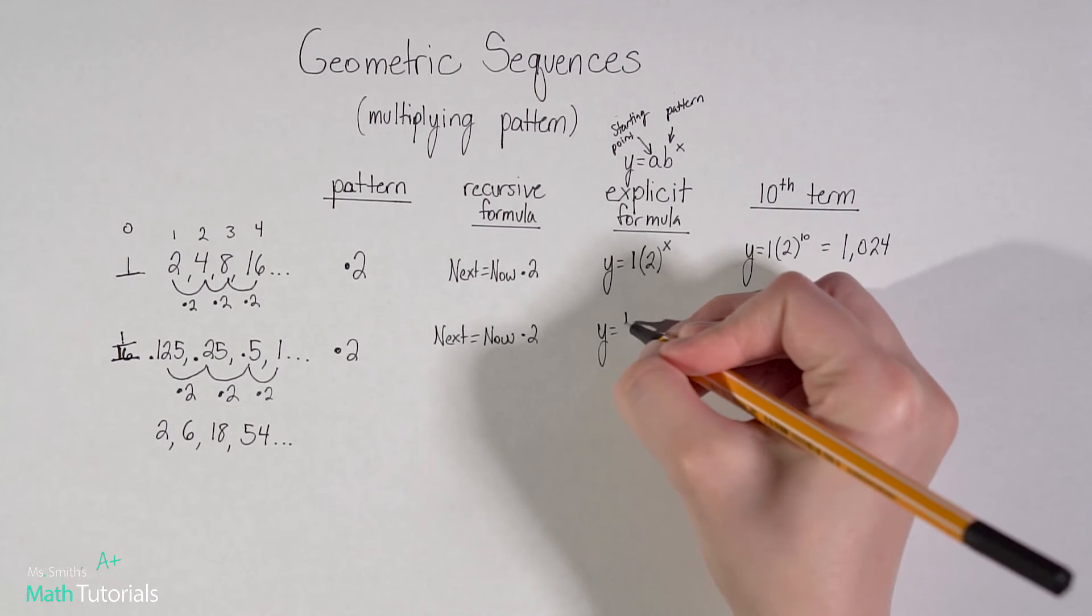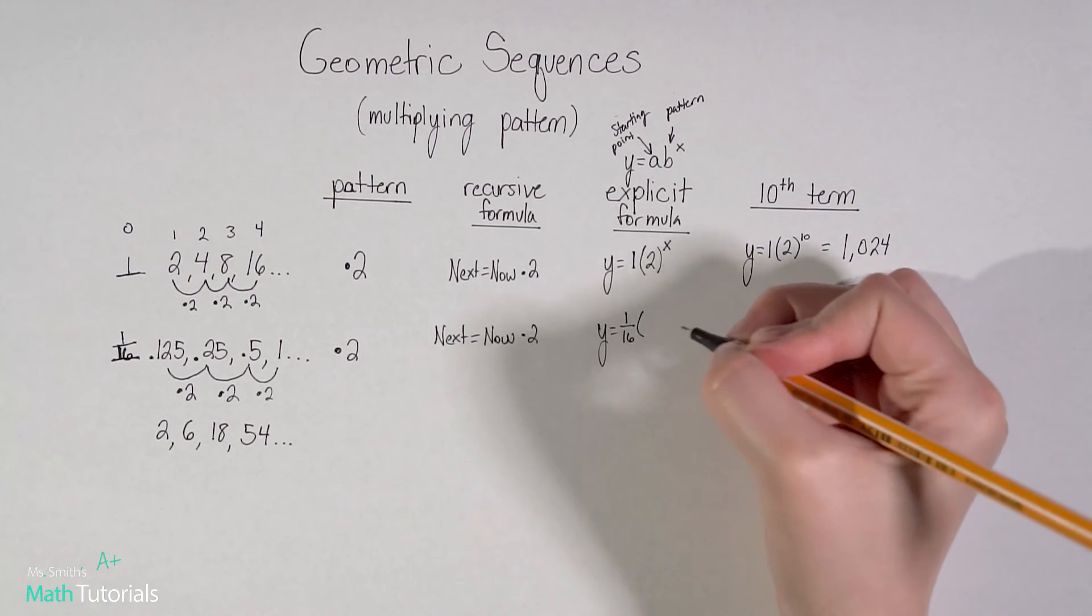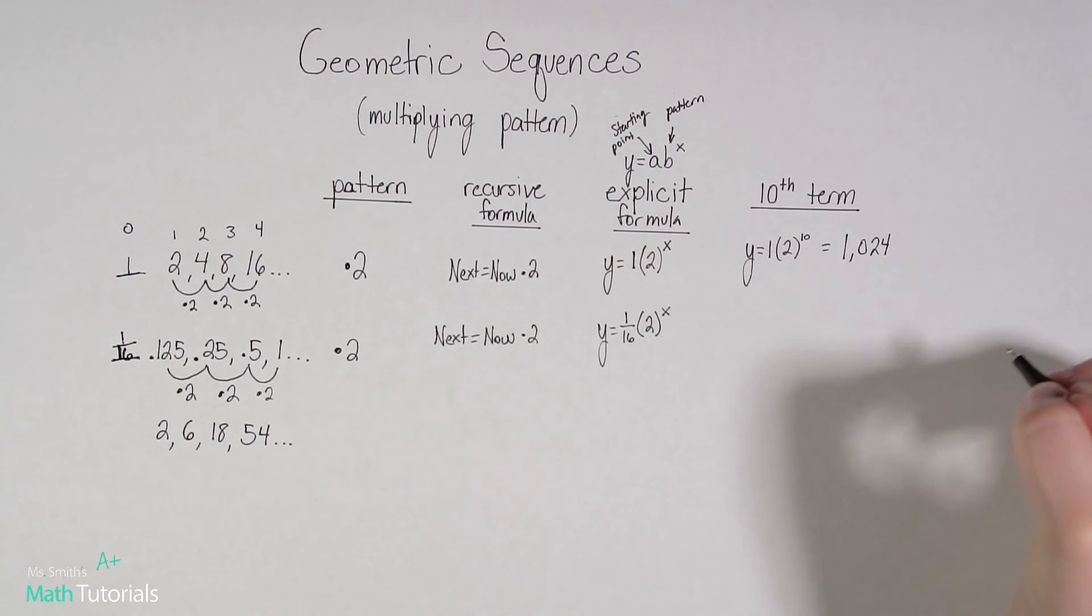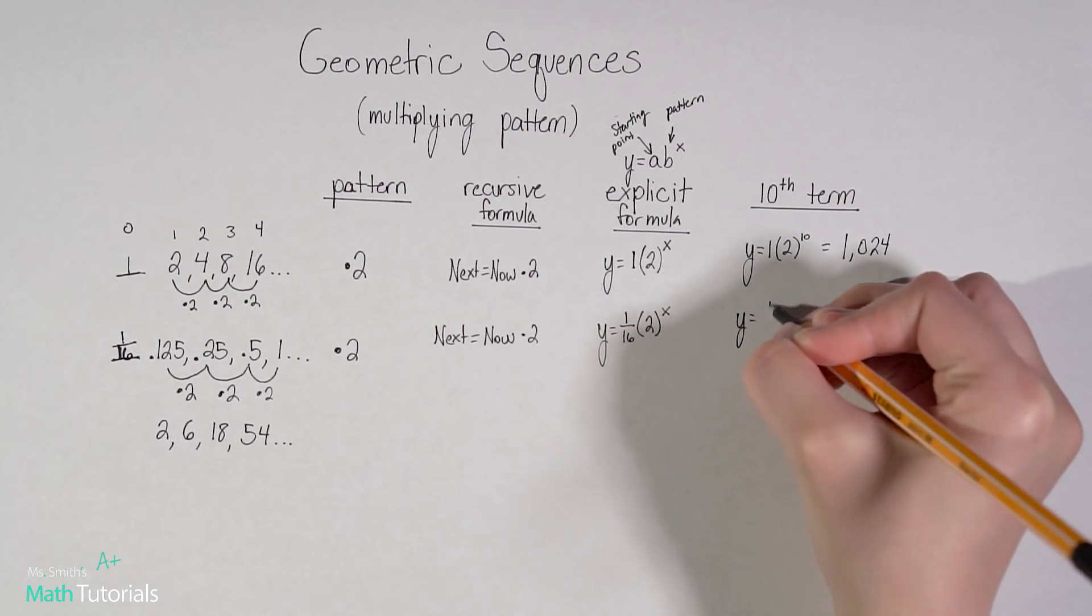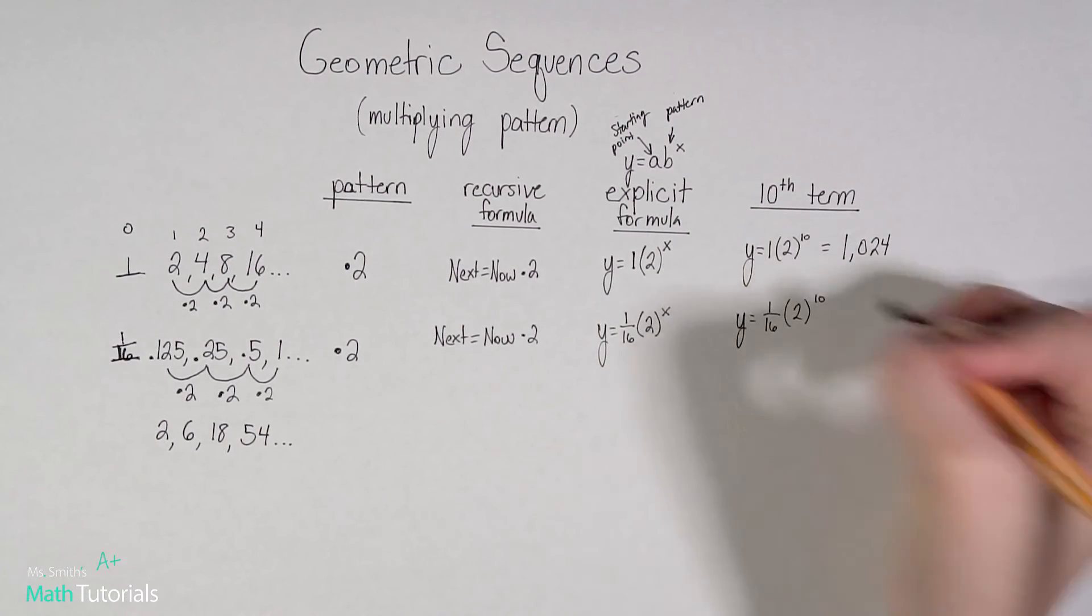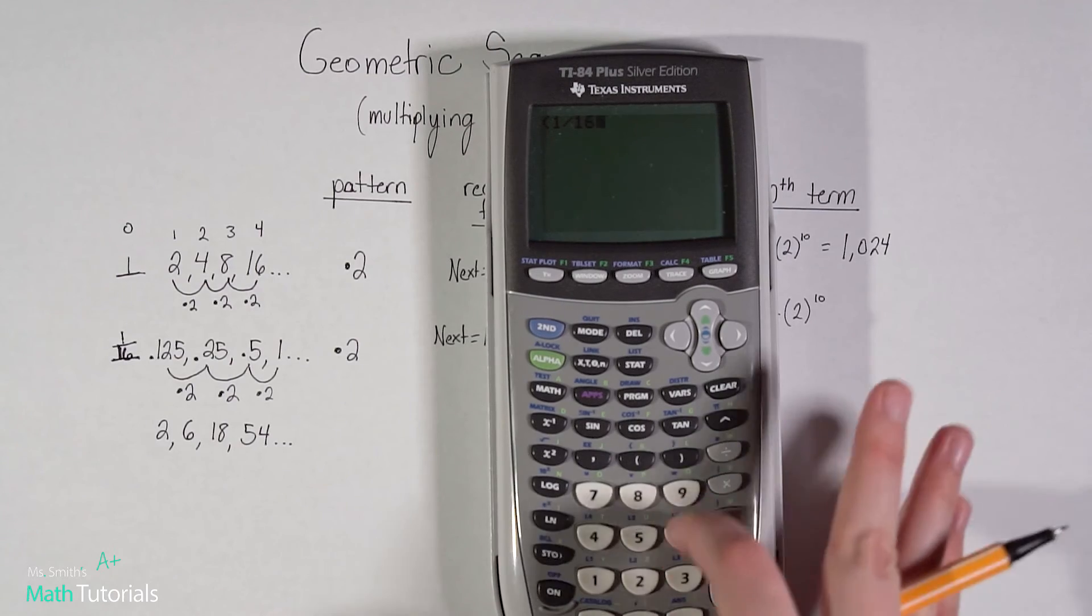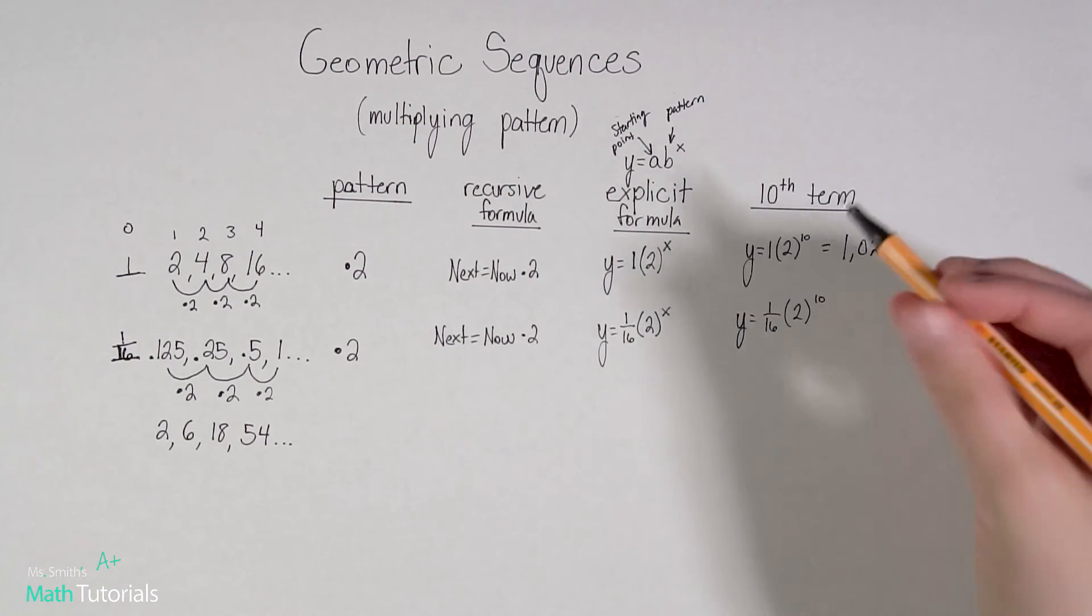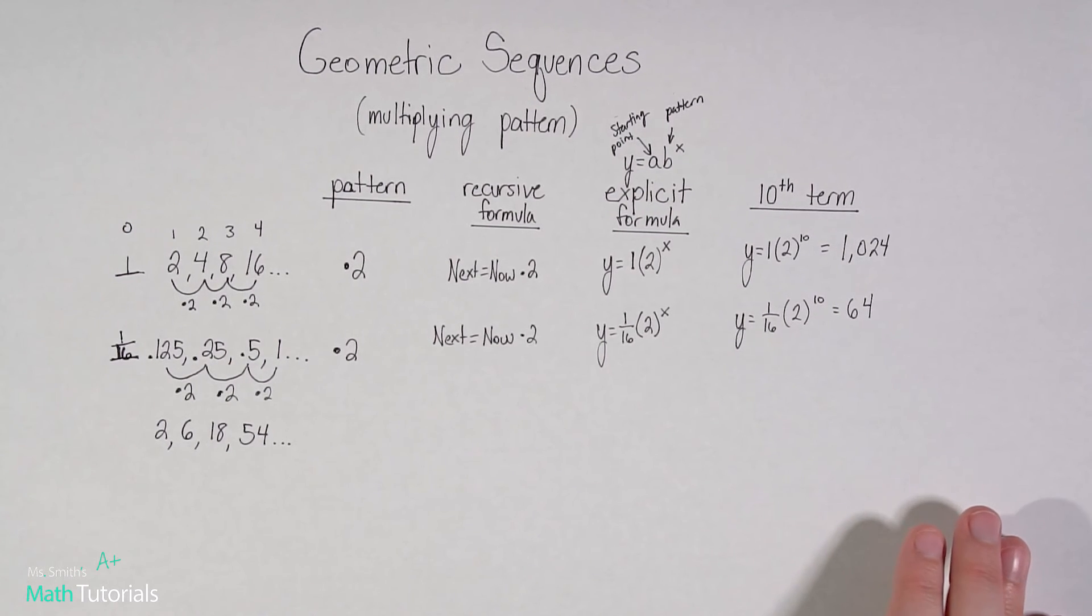If you wrote in the decimal here, that's fine, but I just personally like a fraction more. So 1/16. So what's my starting place? 1/16. My b value is the pattern, so times positive 2 to the power of x. Now for over here, we're going to fill in that x term with 10. So y equals 1/16 times 2 to the power of 10. And I'm going to put that in my calculator. It would be 64.